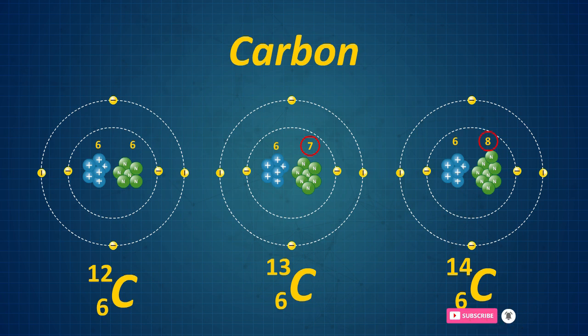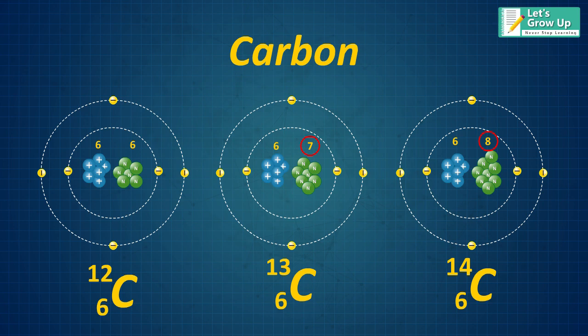When an element's atoms have different numbers of neutrons, they are said to be isotopes of that element.